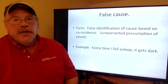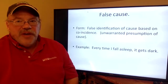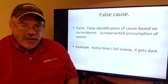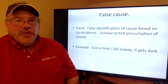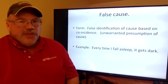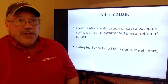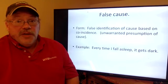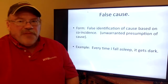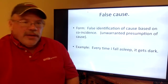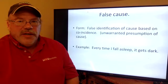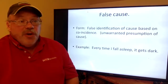The first fallacy is false cause. The form is to falsely identify a cause based on coincidence — an unwarranted presumption of cause even when there is no basis for it. Attributing cause is pretty tricky, so it's not surprising that bad thinking happens here. As a straightforward example: every time I fall asleep it gets dark. You might think that's a causal relationship, but is it really, or is it coincidence?